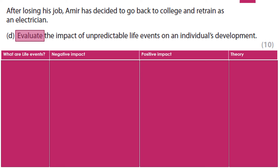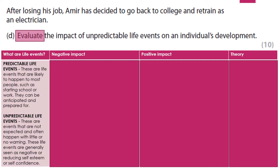Let's take a minute to think about what we want to include. In a real exam, you can write some notes in your booklet, put a line underneath, and cross out the planning before starting your answer. Life events are things that happen during a lifetime that can have positive or negative consequences for individuals. Predictable life events — like starting school or getting a job — are ones we are likely to experience and can plan for. Unpredictable events, such as illness or redundancy, are ones you can't prepare for and are generally seen as negative impacts on individuals.